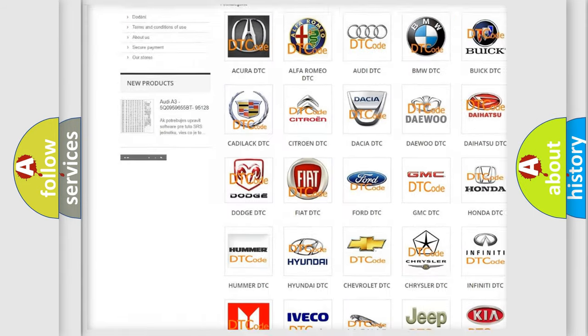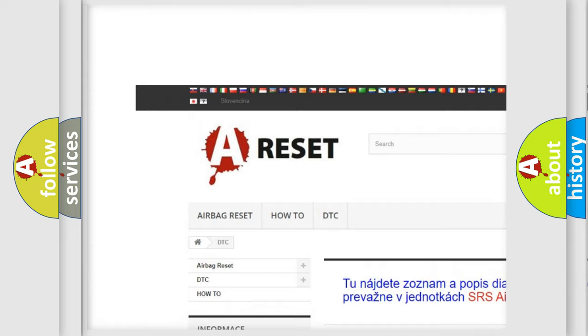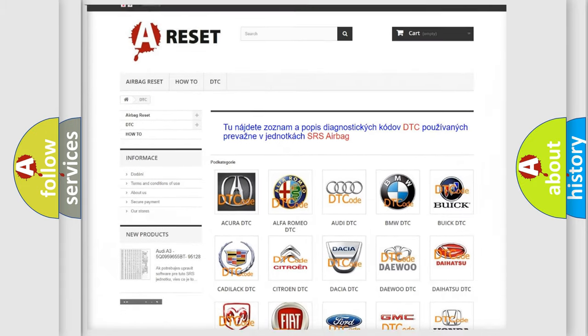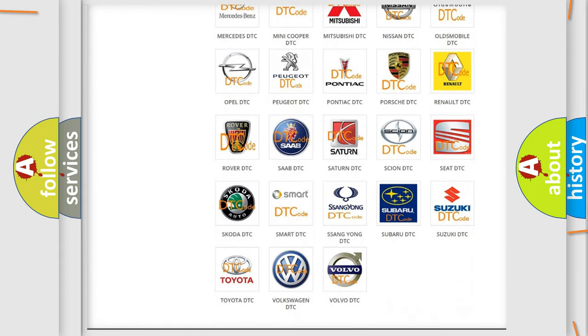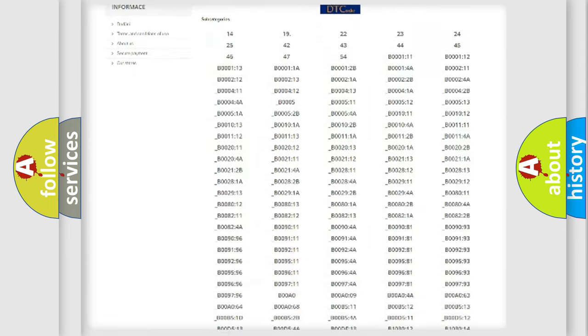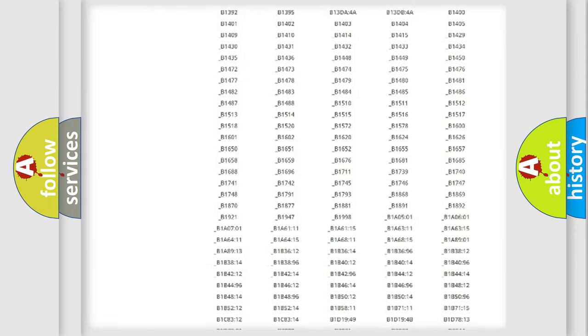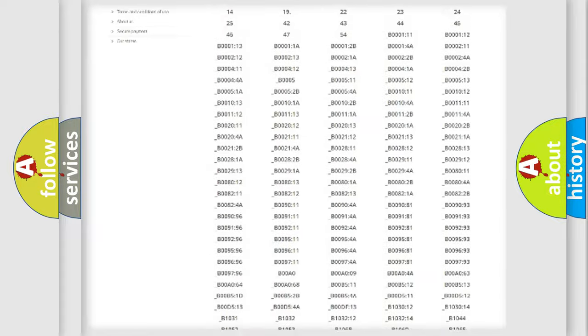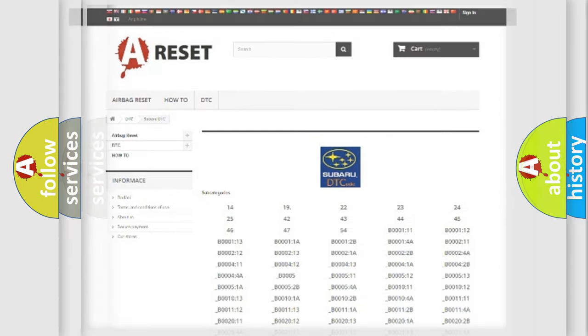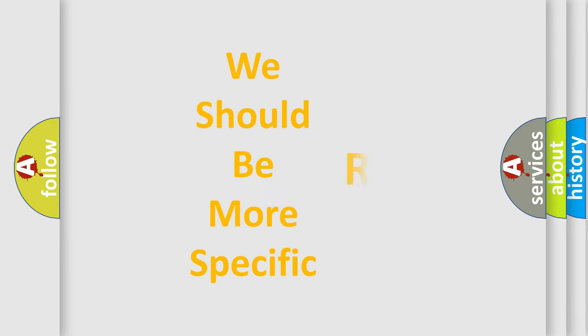Our website airbagreset.sk produces useful videos for you. You do not have to go through the OBD2 protocol anymore to know how to troubleshoot any car breakdown. You will find all the diagnostic codes that can be diagnosed in Subaru vehicles, and many other useful things. The following demonstration will help you look into the world of software for car control units.